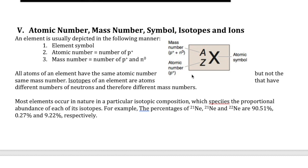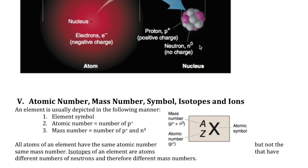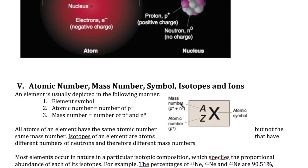Just like each student has a unique student ID number, each element has a unique ID number called the atomic number. The mass number is the number of protons and neutrons. We don't add the electrons because what contributes to the mass of the atom is the protons and neutrons — they make up probably 99% of the mass. So when we figure out the mass number, we don't count the electrons, not because the electron isn't there, but because it doesn't add too much to the mass.